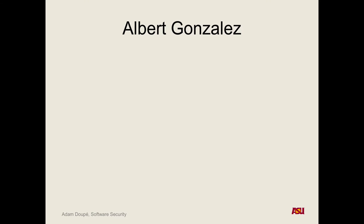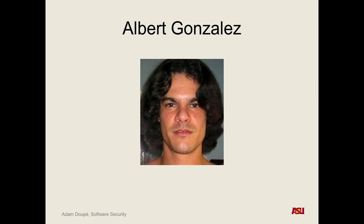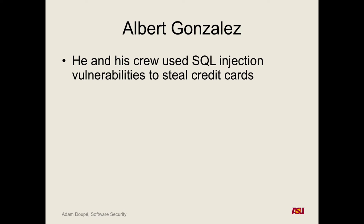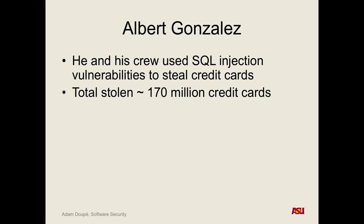Albert Gonzalez and his hacking crew used SQL injection vulnerabilities to steal credit cards. They were behind the TJ Maxx hacks, Dave & Buster's, and Heartland Payment Systems — an actual credit card processor, so they got right to the source. In total, they stole an estimated 170 million credit cards.